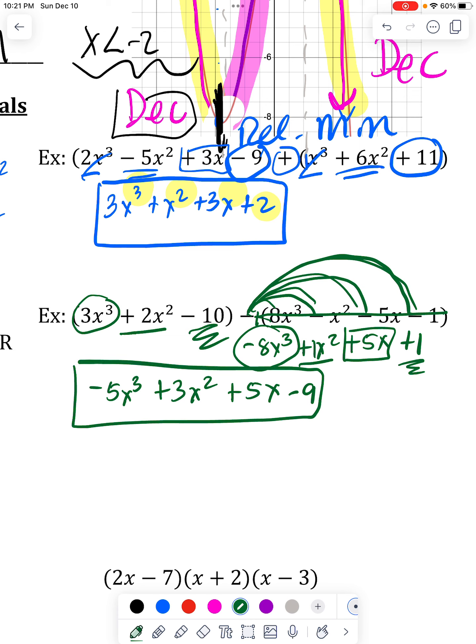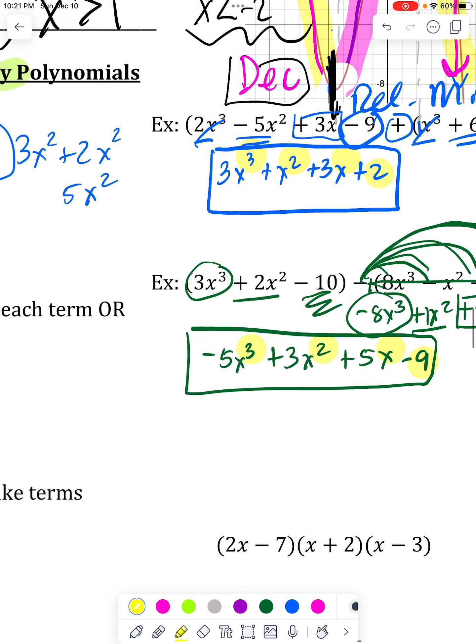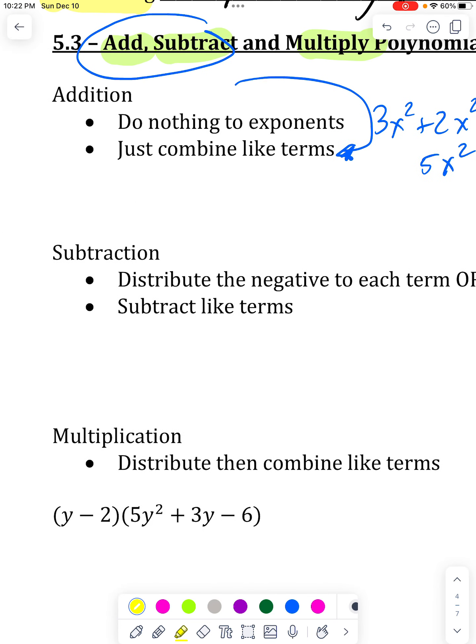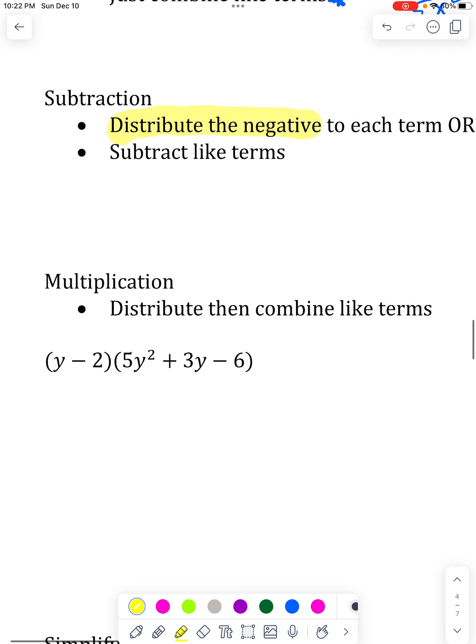my powers go down from 3, 2, 1, none. So really the catch on that is distributing the negative. That's the thing that makes it different. And then you can kind of treat it just like you did the addition. But you just have to be careful of that subtraction because that does catch people.